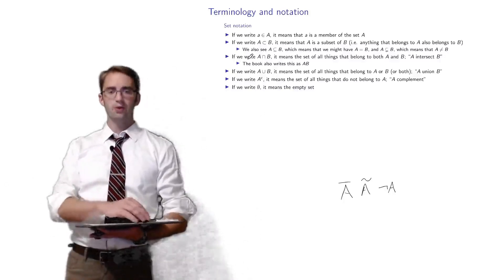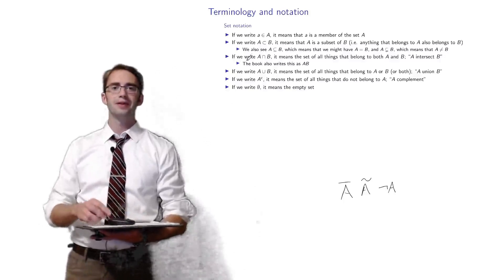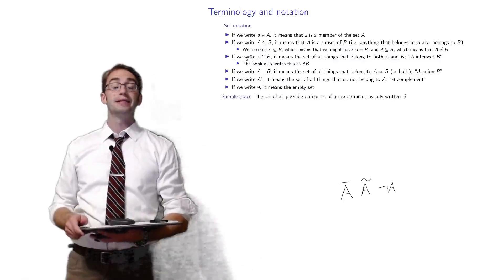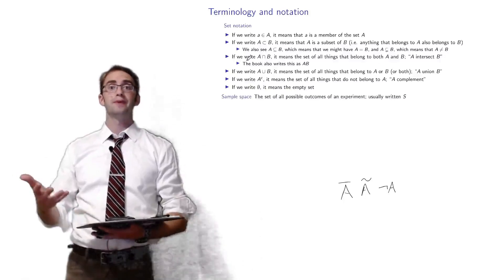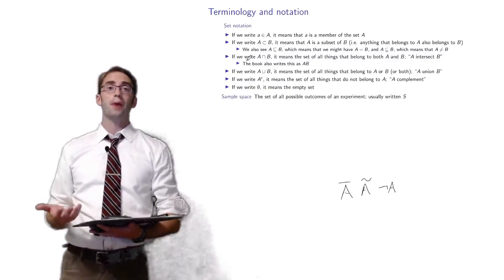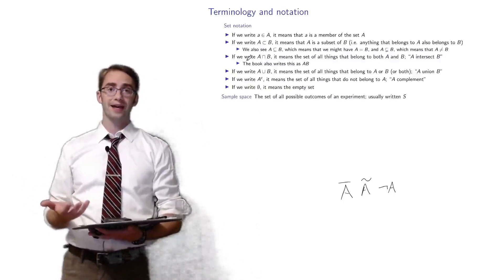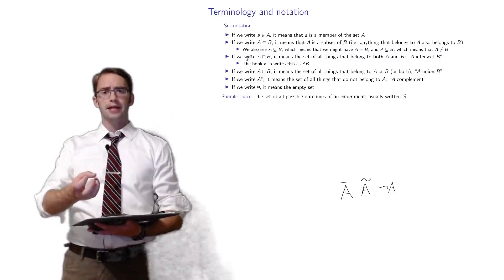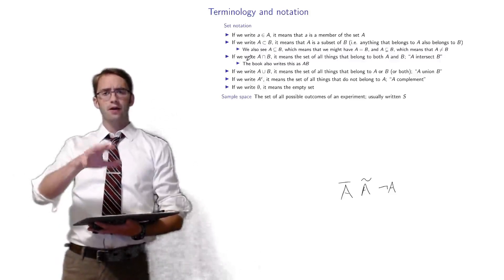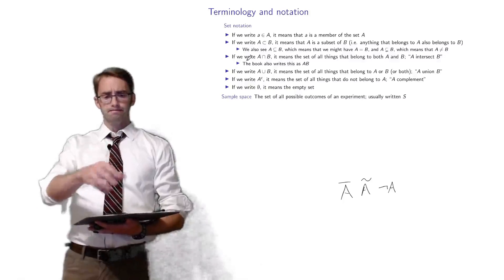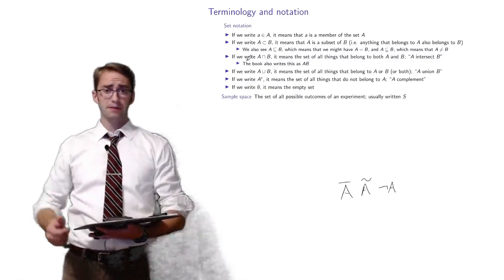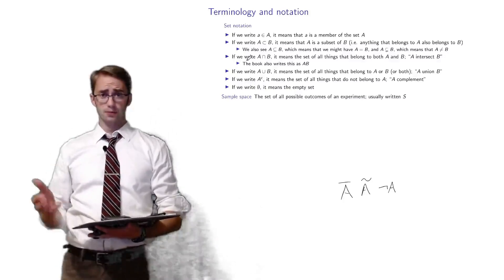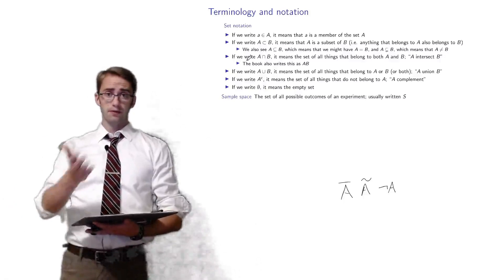The empty set is just an O with a slash through it. The sample space is the set of all possible outcomes of an experiment — usually you use the letter S for that. It's just all the possible things that could happen. The best example is rolling a six-sided die: the sample space is the numbers one through six.